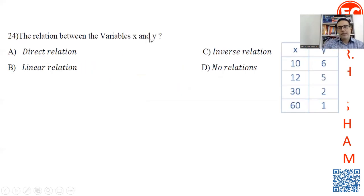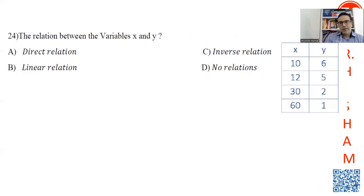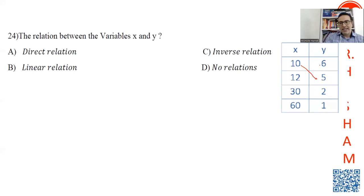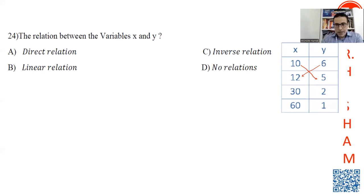Question 24 presents a relation between x and y. How do you decide if the relation is direct, linear, inverse, or no relation? If you multiply 10 by 5 and 6 by 12 and get the same value, this is a direct relation. If multiplying 10 by 5 and 12 by 6 gives the same value, this is also a direct relation — but this one is not.